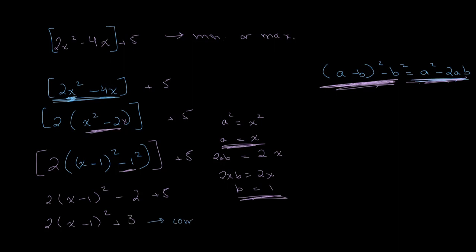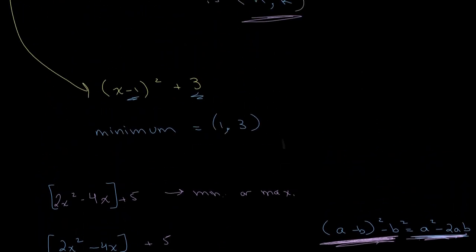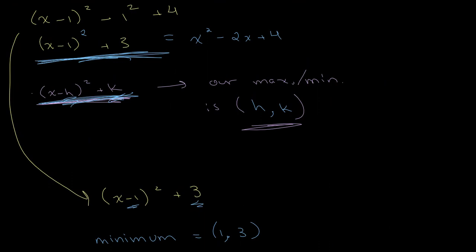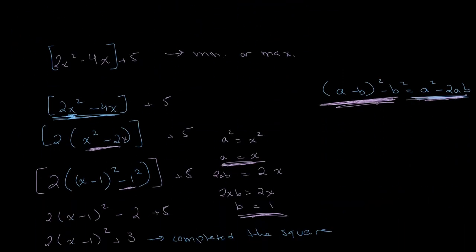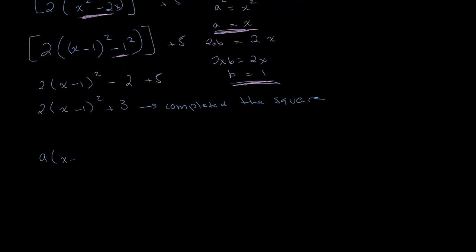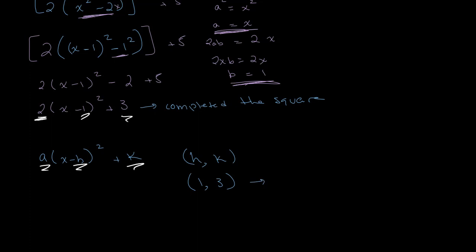Looking back at our format a(x - h)² + k, the maximum or minimum point is (h, k). Matching our equation 2(x - 1)² + 3: a = 2, h = 1, k = 3. Since the coefficient is positive this is a minimum point. Therefore, the minimum point is (1, 3).